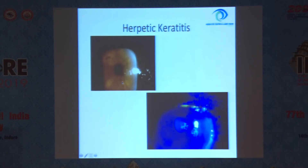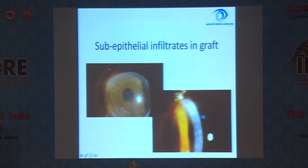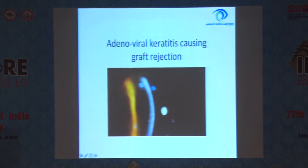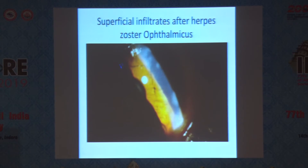Herpetic keratitis can also present like punctate lesions or it can present with dendritic lesions. This is a typical adenoviral keratitis with superficial infiltrates — this is what they look like. Subepithelial infiltrates can be present in a graft also. Adenoviral keratitis can sometimes cause graft rejection, and it can be confused with stromal graft rejection. This is a nummular keratitis, which is also a type of subepithelial infiltrates. These are superficial infiltrates in a patient with herpes zoster ophthalmicus which appeared after the keratitis had healed.